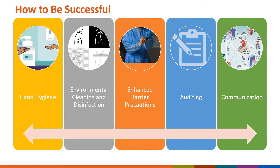For enhanced barrier precautions to be successful, the use of EBP must be incorporated with several other good practices including hand hygiene, environmental cleaning and disinfection, auditing of hand hygiene and appropriate use of PPE, and communication about residents with MDROs both within your facility and outside of your facility.